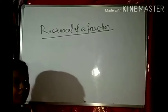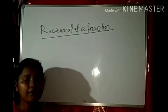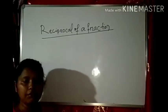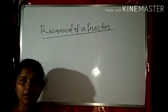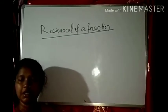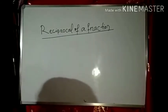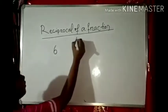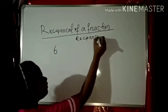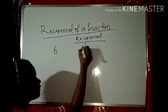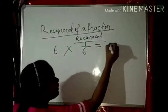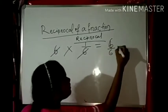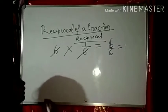Before starting reciprocal of fraction, let's rewind what is the reciprocal of a whole number. When two non-zero numbers are multiplied and the product is one, then those two non-zero numbers are reciprocal to each other. For example, the reciprocal of 6 is 1 by 6. When you multiply 6 into 1 by 6, you get 6 by 6, which equals 1.